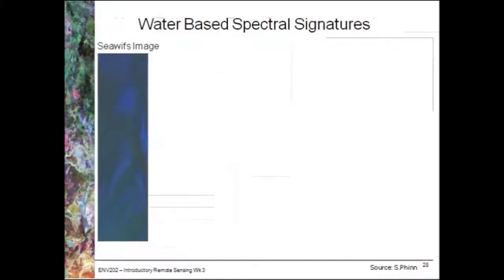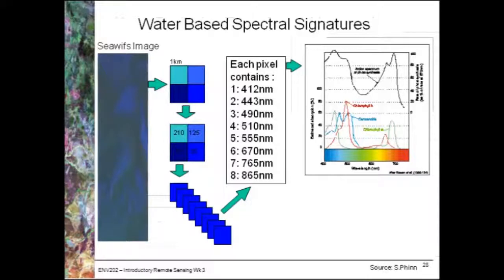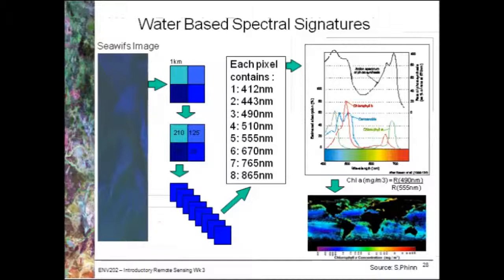All this leads us to be able to create quantifiable biophysical maps based on satellite imagery. This is an example from a SeaWoofs image. Each pixel is 1 km by 1 km and the image contains 8 spectral bands. Using what we know about the absorption of chlorophyll in specific wave bands, we can come up with a relationship. In this case we're looking at a relationship between chlorophyll A and the reflectance in bands 3 and 5. We can use this to create an image of the entire Earth showing us the chlorophyll A concentration in terms of milligrams per meter cubed.